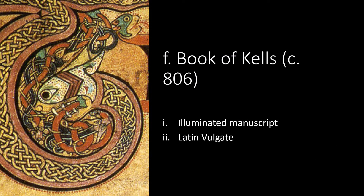The Book of Kells is an illuminated manuscript gospel book in Latin containing the four Gospels of the New Testament together with various preparatory texts and tables. Pope Gregory the Great described illuminated manuscripts as the living reading of the Lord's story for those who cannot read. It was created in the Columban monastery in Ireland and may have had contributions from various Columban institutions from both Britain and Ireland. It is believed to have been created around AD 806. The text is largely drawn from the Vulgate but also includes passages from earlier versions of the Bible known as the Vetus Latina. It is a masterwork of western calligraphy and represents the pinnacle of insular illumination. The manuscript takes its name from the Abbey of Kells, which was its home for centuries.